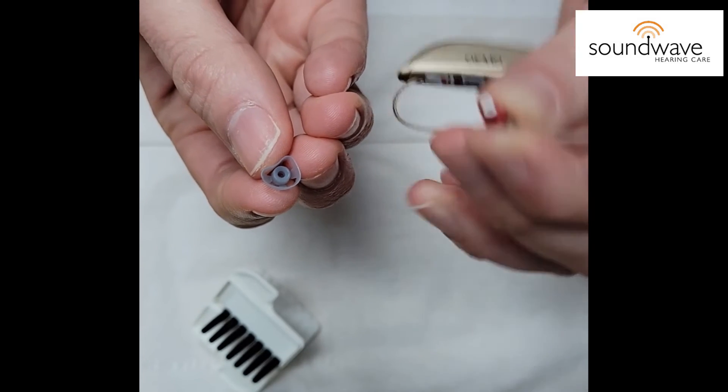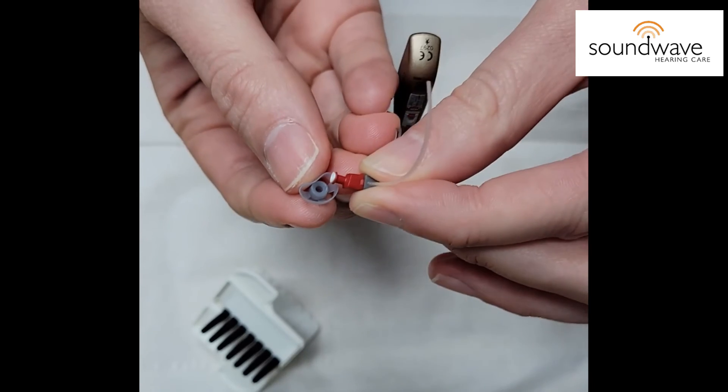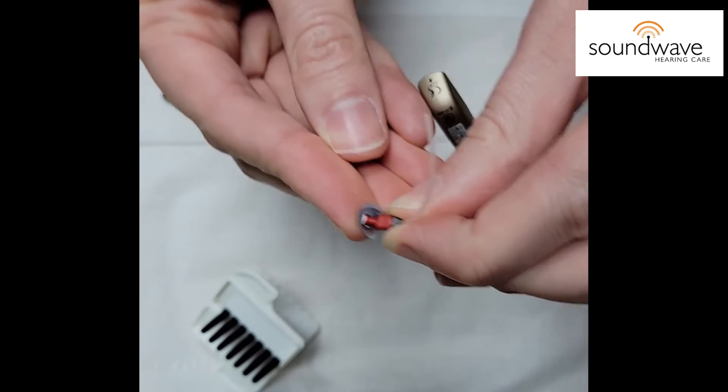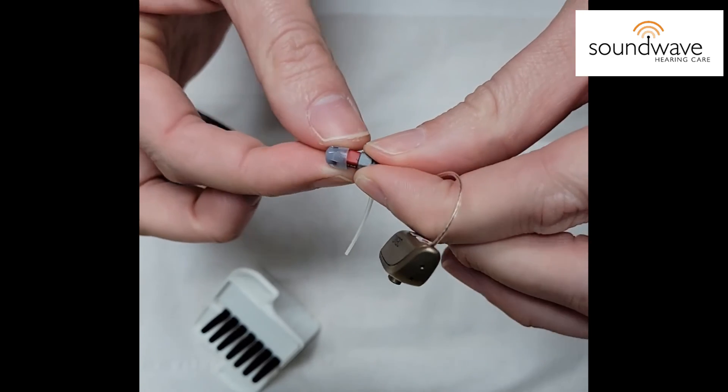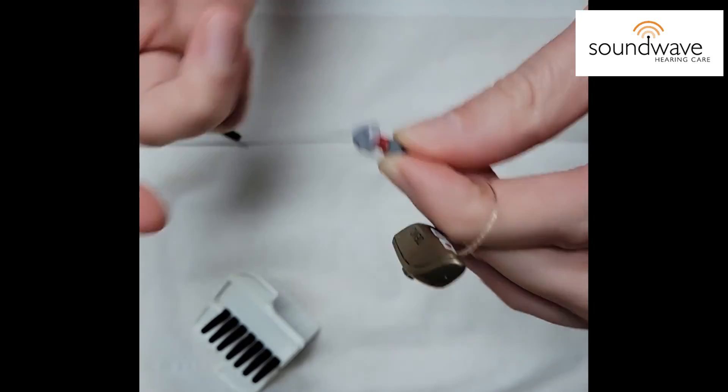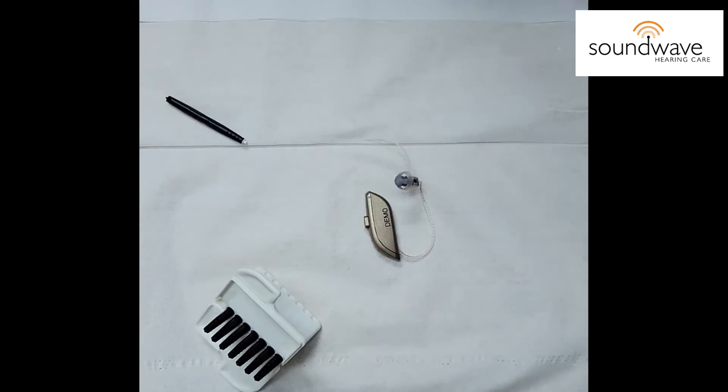As you can see there's a little circle within the larger circumference. You're going to line it up and push it on and I always recommend giving it a little tug. And now your hearing aid will hopefully work.